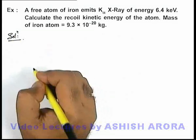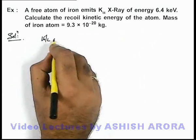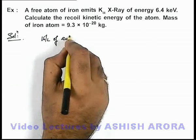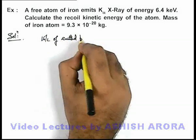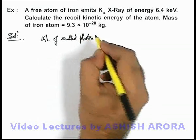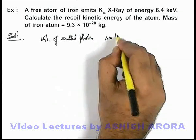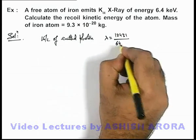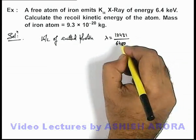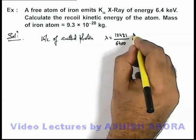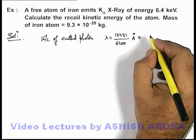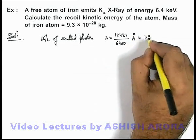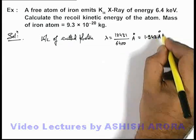In this situation, if we calculate the wavelength of the emitted photon, this can be very easily calculated as lambda equals 12431 divided by 6400. Since it's in electron volts, we directly get the value of wavelength in angstroms. This will be 1.942 angstroms. This is the wavelength of the K-alpha X-ray emitted.